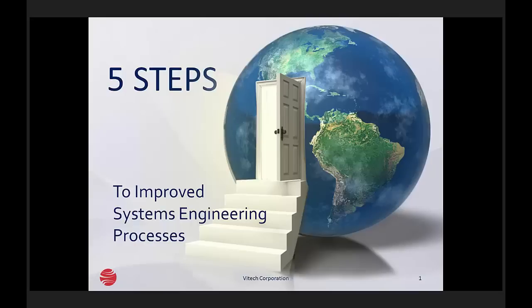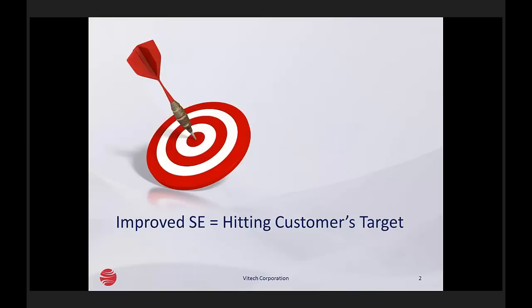Thanks, Laura. We'll begin with a shout out to our host, Laura Hynek, and our brand new production engineer this afternoon. I appreciate all your help and work. This afternoon, we're going to talk about five steps to improve systems engineering processes. Systems engineering has always been critical, but it's becoming even more important in our world where the demands of time and pace and resources force us to do more with less. Our target is the customer's target, and the way in which we improve systems engineering is by hitting the customer's target. That's our measure.